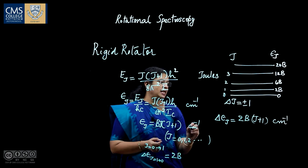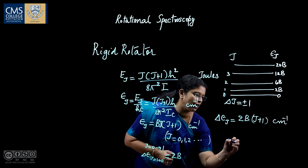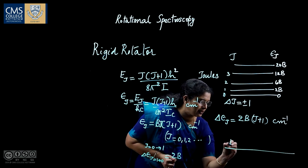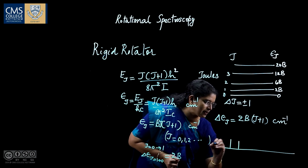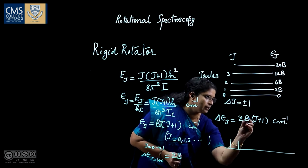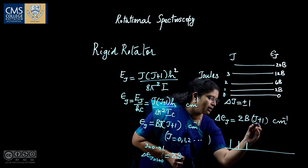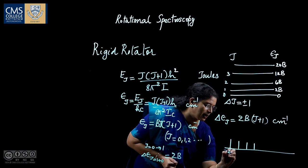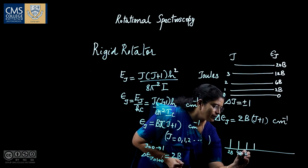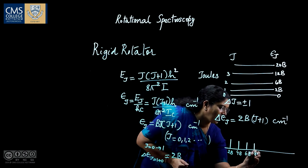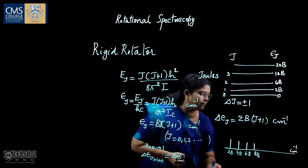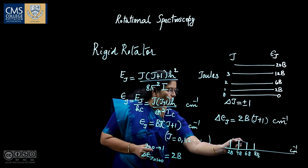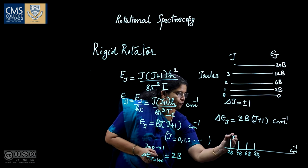Drawing the spectral lines, the first line appears at 2B, the second at 4B, the third at 6B, the fourth at 8B, and so on in cm⁻¹. From the spectral lines it is clear that all lines are equidistant, with a separation of 2B between consecutive lines.